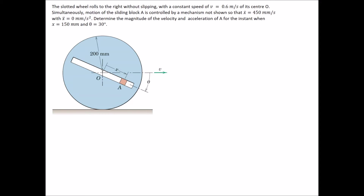The best thing to start this question is making note of all the different information given. The velocity of O is 0.6 m/s, and since it's a constant speed, we have zero acceleration. We're also given information about how the block moves within the slot: x-dot is 450 mm/s, and x-double-dot is zero, so it has a constant speed in the slot.